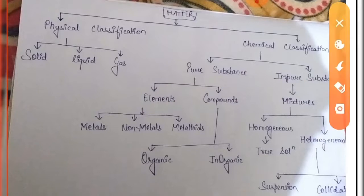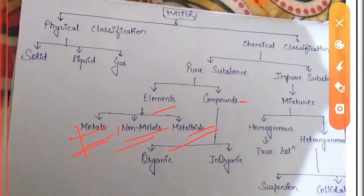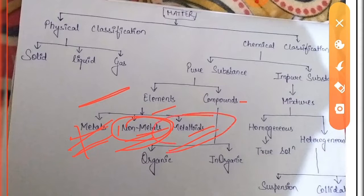There are two main categories of pure substance: the first one is element and the other one is compound. Elements are basically classified into three parts which are metals, non-metals and metalloids. Metals are the electropositive substances which have a positive charge after donating their valence electrons. Those elements which acquire a plus charge after donating their valence electrons are known as metals. On the other hand, those elements which have a negative charge after accepting electrons in their valence shell are known as non-metals. Metalloids are those elements which show the properties of both metals and non-metals.